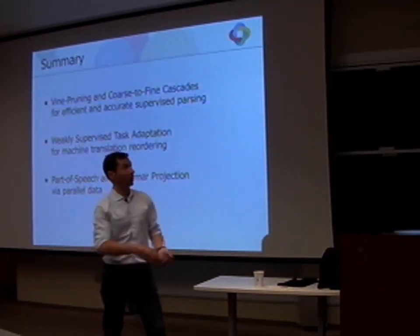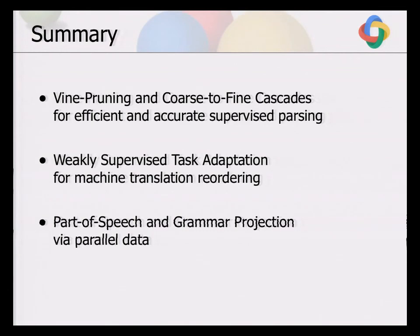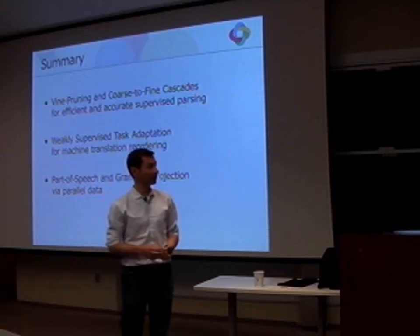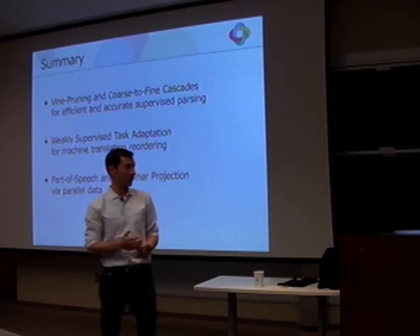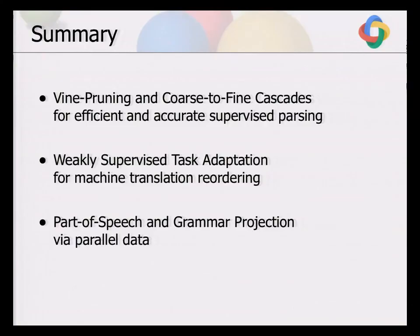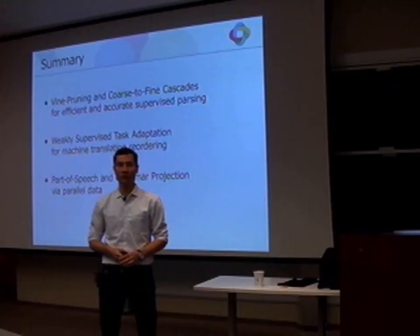To wrap up: we talked about fast parsing using band parsing, training specifically for pruning states. We talked about adapting the parser when we don't care about parse accuracy per se but only about downstream task quality — and this is, to my knowledge, the first demonstration that improving the parser for a particular task can result in downstream task quality improvements. And we talked about projecting parsers to new languages using de-lexicalized transfer and the augmented loss framework.